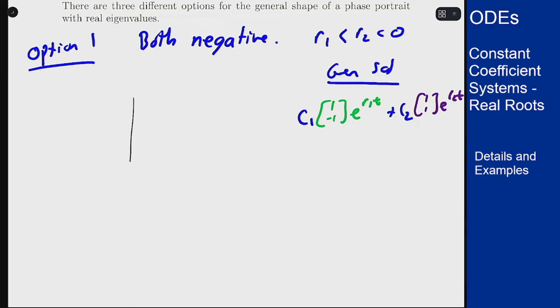For this picture we start with our straight line solutions which are [1, -1] out this way going in because r1 is negative and [1, 1] going out this way also pointing in because r2 is negative. Now what happens in the middle?